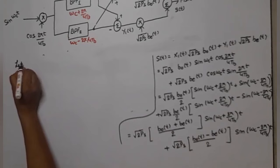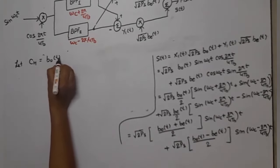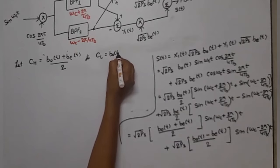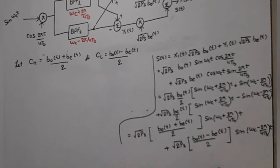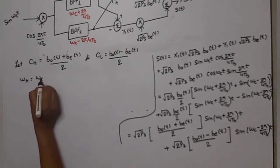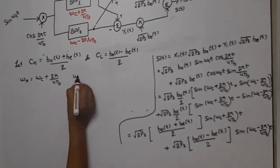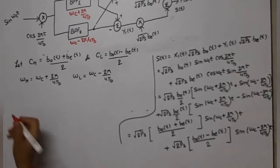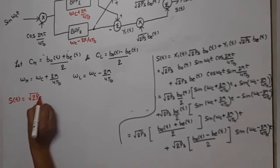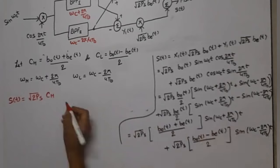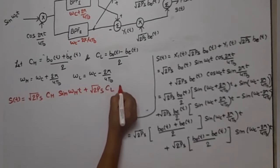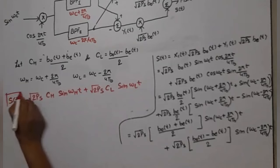Defining ω_H = ω_c + 2π/4T_B and ω_L = ω_c − 2π/4T_B, the final expression becomes: s(t) = √(2P_s)·C_H·sin(ω_H·t) + √(2P_s)·C_L·sin(ω_L·t). In Case 1, if B_odd equals B_even, then C_L = 0 and C_H = ±1, so only the high frequency component exists. In Case 2, if B_odd equals −B_even, then C_H = 0 and C_L = ±1, so only the low frequency component exists.